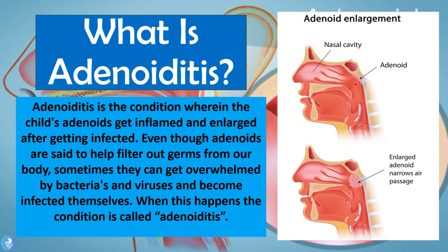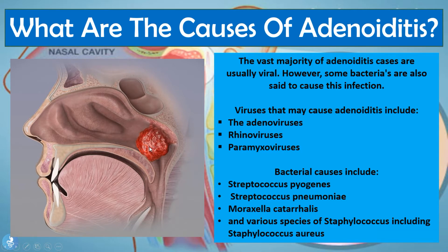The vast majority of adenoiditis cases are usually viral, however some bacteria are also said to cause this infection. Viruses that may cause adenoiditis include adenoviruses, rhinoviruses, and paramyxoviruses. Bacterial causes include Streptococcus pyogenes, which is responsible for causing strep throat, as well as Streptococcus pneumoniae, Moraxella catarrhalis, and various species of Staphylococcus including Staphylococcus aureus. These are the usual suspects responsible for the development of this disease.